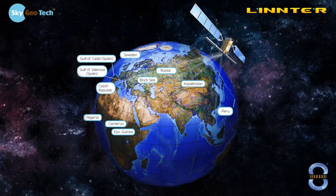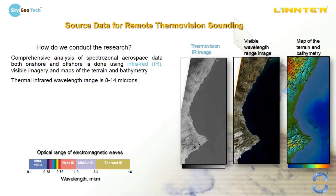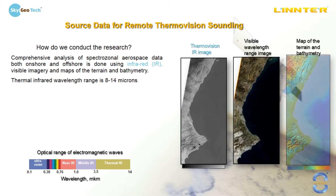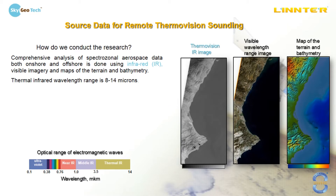Here is the geography of our projects. We are now in more than 15 countries including Russia and Kazakhstan. As a source and basic data, we use infrared images with the wavelength range from 8 up to 14 microns. We also use visible range images and map of the terrain and bathymetry if necessary.